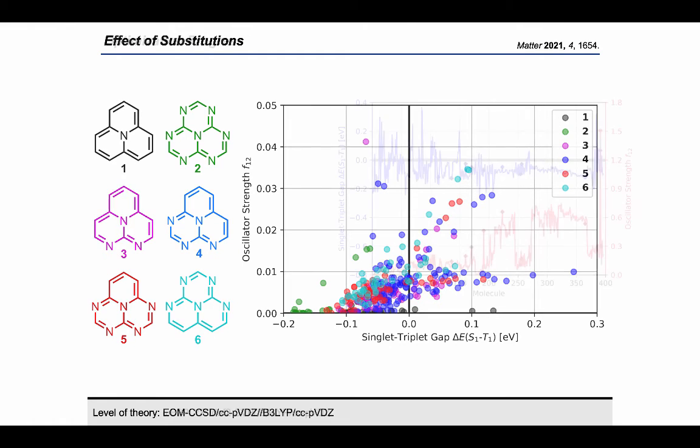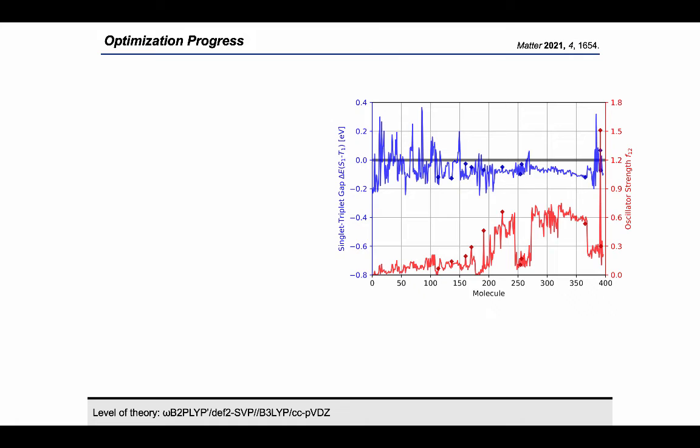The corresponding progress as a function of time is depicted to the right. I would like to emphasize that this plot depicts the actual history of the discovery process. It shows the properties of the molecules visited as we followed the DMTA workflow. The progress of the oscillator strength is shown in red. The progress of the singlet-triplet gap is depicted in blue.